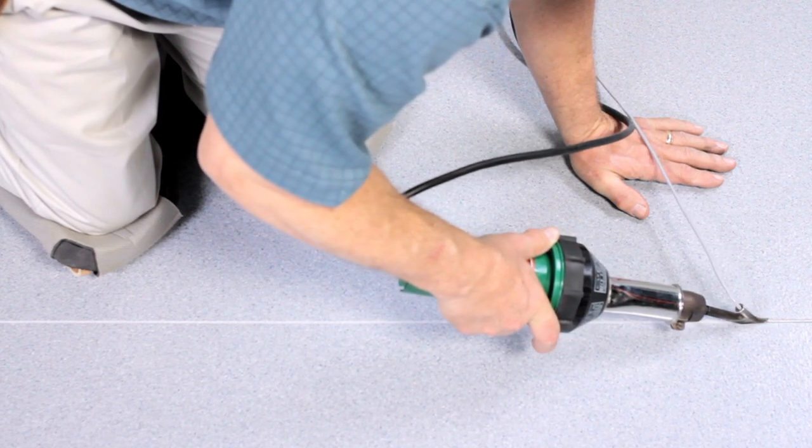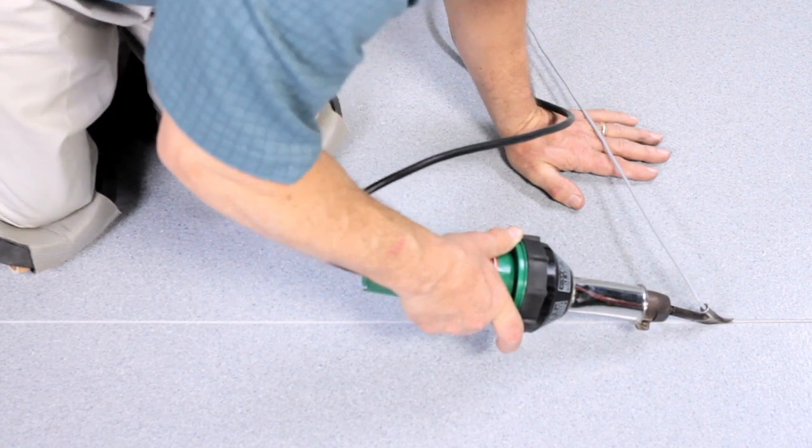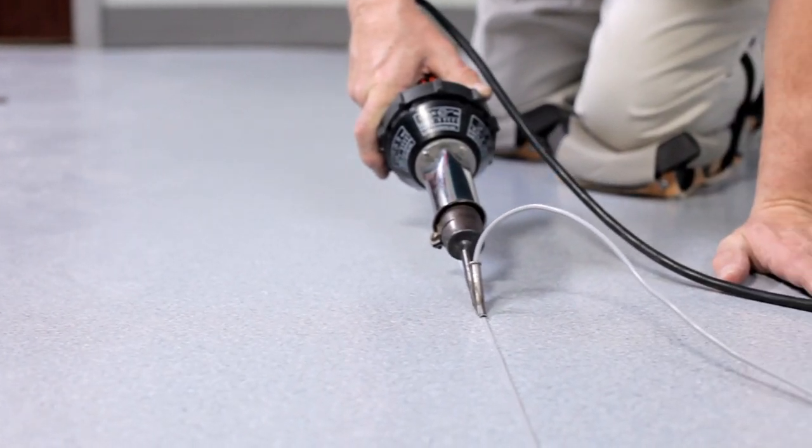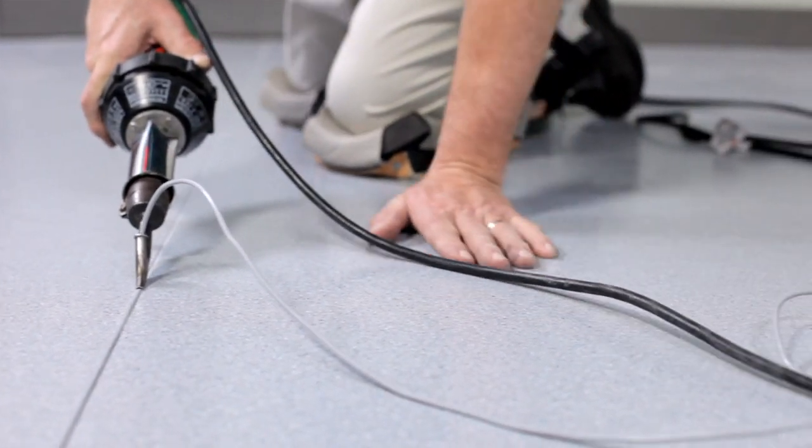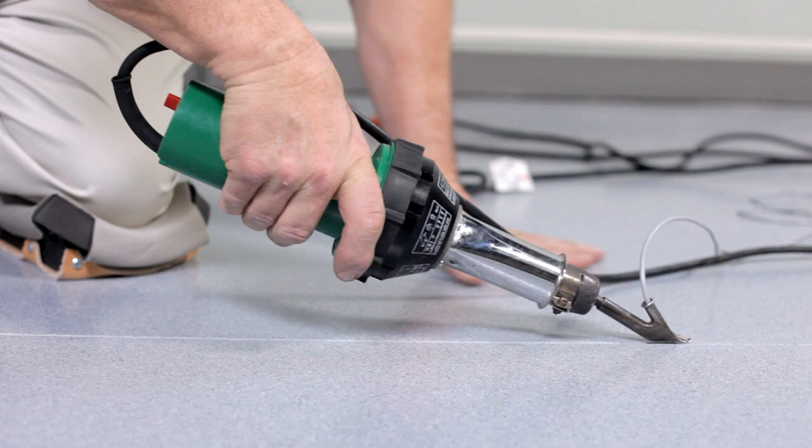Always test the heat setting on a scrap of flooring before proceeding to weld the entire seam. Cut a length of weld rod several feet short of the total seam length. Insert the rod into the preheated nozzle and beginning at the wall, melt the rod into the groove.